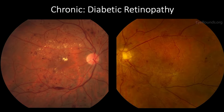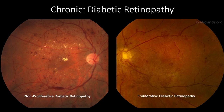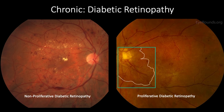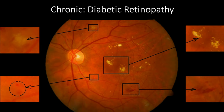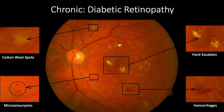The next condition we will review is diabetic retinopathy, the leading cause of vision loss worldwide among patients aged 25 to 74. Diabetic retinopathy is often classified into two categories: non-proliferative and proliferative diabetic retinopathy. The distinguishing feature is the presence of abnormal blood vessels, with neovascularization characterized by a lacy network of blood vessels. Classic signs of non-proliferative diabetic retinopathy include cotton wool spots, microaneurysms, hard exudates, hemorrhages, and retinal swelling.